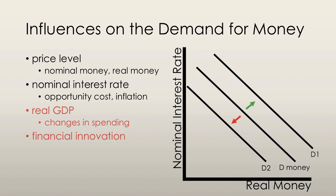Real GDP affects the quantity of money held, which depends on the amount that is going to be spent by households and businesses, and this depends on real GDP. If real GDP increases, it implies that real incomes have increased; thus, more goods and services are bought, for which more money is held.